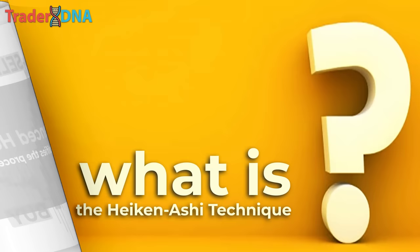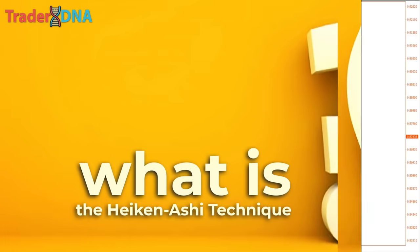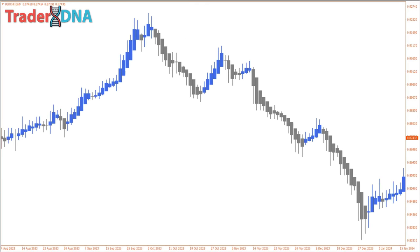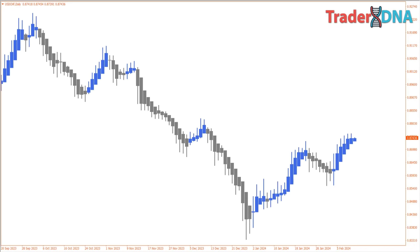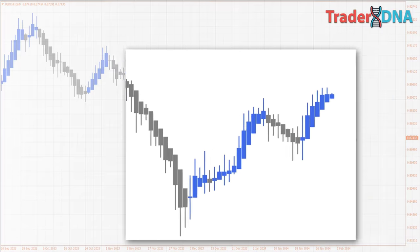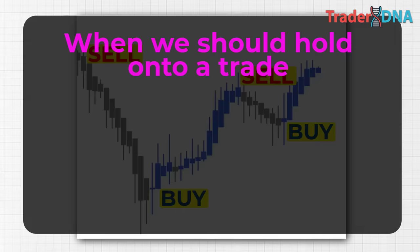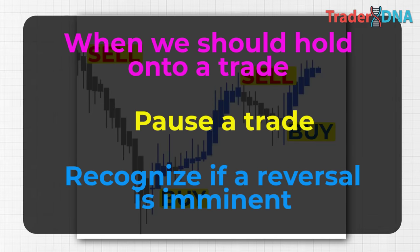What is the Heikin Ashi technique? The Heikin Ashi technique is a Japanese candlestick-based technical trading tool that utilizes candlestick charts to represent and visualize market price data. It is employed to identify market trend signals and forecast price movements. The Heikin Ashi method utilizes average price data to filter out market noise, resulting in a clear illustration of market trends and direction, aiding in determining potential price movements and when to hold, pause, or recognize if a reversal is imminent.